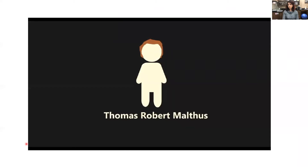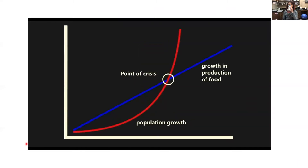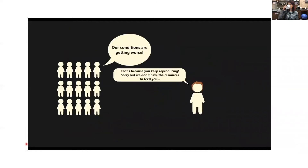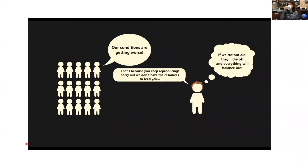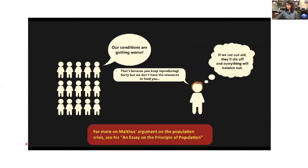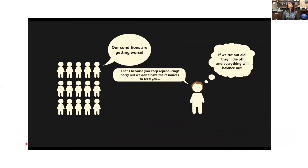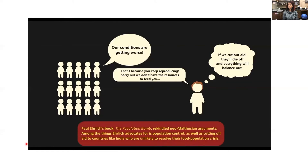Thomas Robert Malthus was a British scholar known for his population theory. He demonstrated that population grows exponentially while food production grows linearly, suggesting humanity will face a massive agricultural crisis due to overpopulation. Overpopulation will create poverty as more poor people reduce wages. For Malthus, the solution was cutting aid for the poor, whom he blamed for the population crisis. Only indirect population control through strict austerity could prevent the crisis. While many of Malthus's points have been challenged, arguments about overpopulation driving climate change or resource scarcity still draw from his central point — this is neo-Malthusianism.